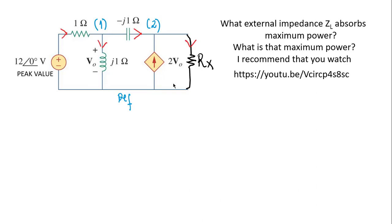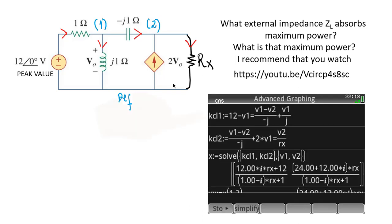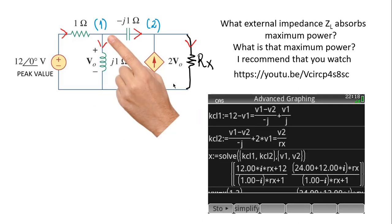I write the KCL equation for node one: currents going in from the left are (12 − V1)/1; currents leaving the node are the top branch (V1 − V2)/(−j) and the inductor branch V1/j.